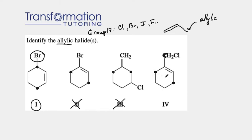Well, this one has none. This one has none. But this carbon does have a halogen on it, which is a chlorine. So number four must be an allylic halide as well.